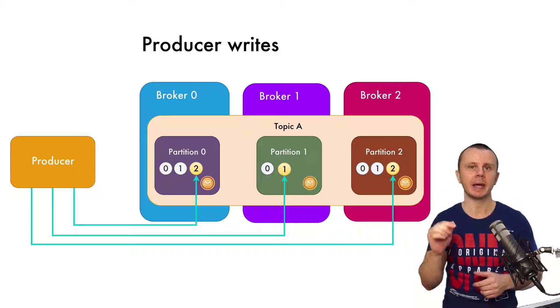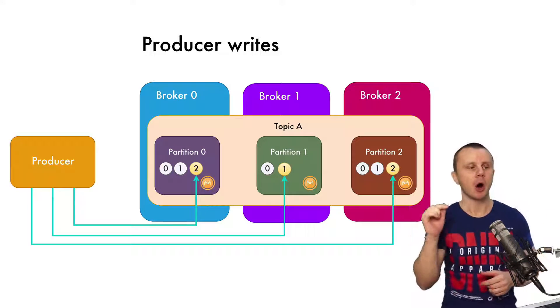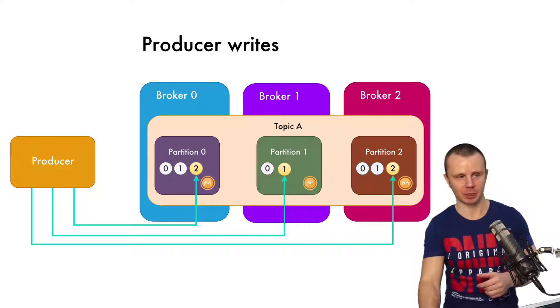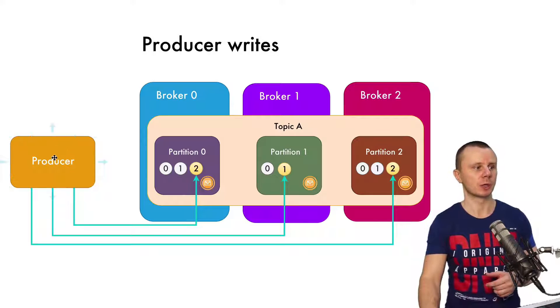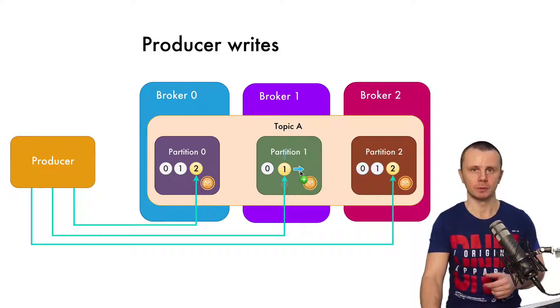But the main idea here is that new messages will be added only after existing messages. For example, if the producer produces one more message to partition one, then this message will get offset number two, and so on.